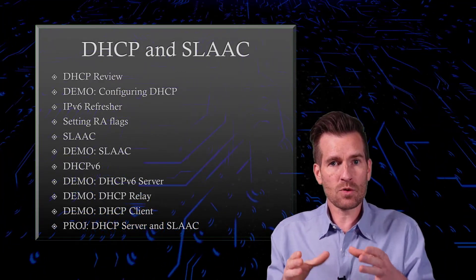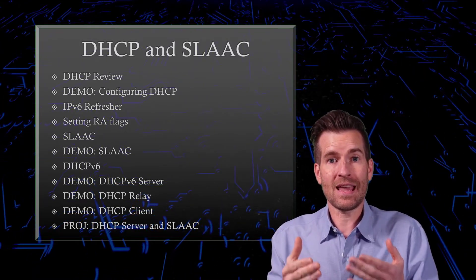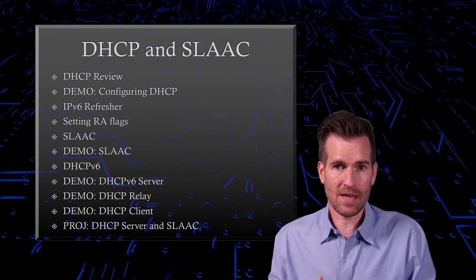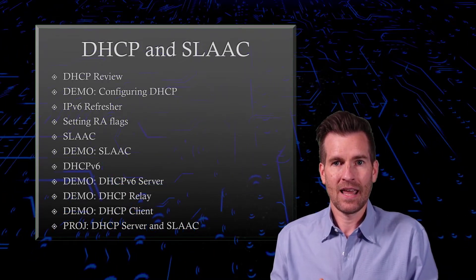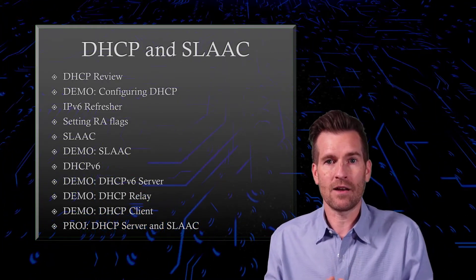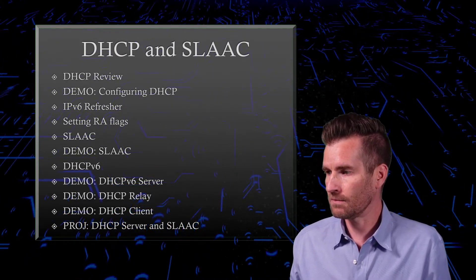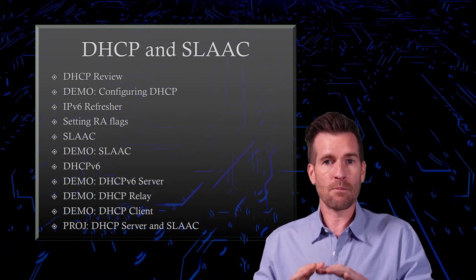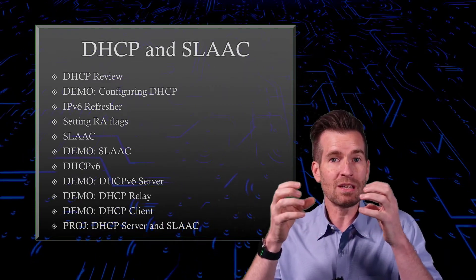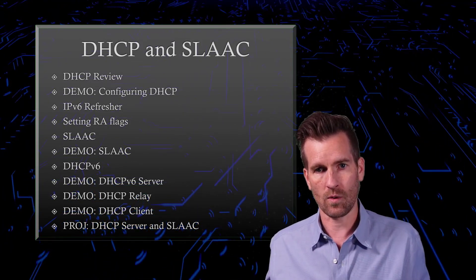Then we're going to talk about a DHCP client. There are times when we want our Cisco equipment to actually be a DHCP client and receive an IP address — auto-configure an IP address on a Cisco piece of equipment. Then we'll finally wrap up with talking about what we're going to implement into our network moving forward.